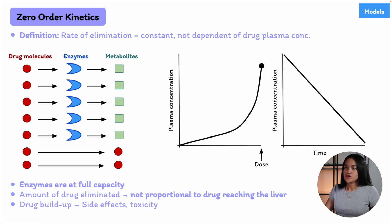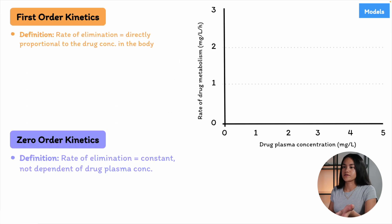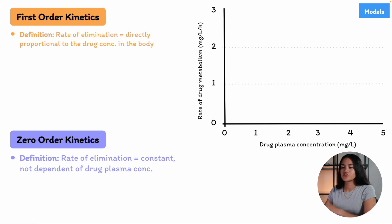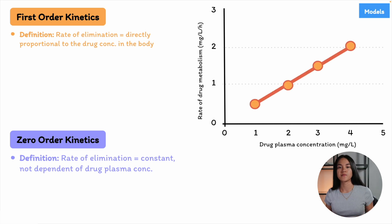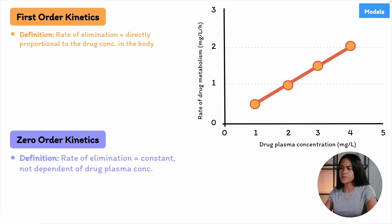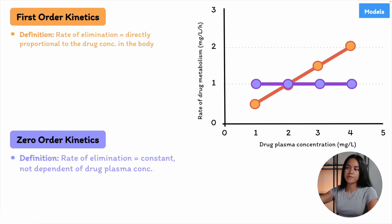Let's represent these two models graphically, looking at the rate of drug metabolism in milligrams per liter per hour as a function of drug plasma concentration. For first-order elimination kinetics, this rate is proportional to the amount of drug — as drug molecules increase, so do the enzymes recruited. In the case of zero-order elimination, the rate of metabolism is constant and does not depend on the amount of drug, because the enzymes are at full capacity.